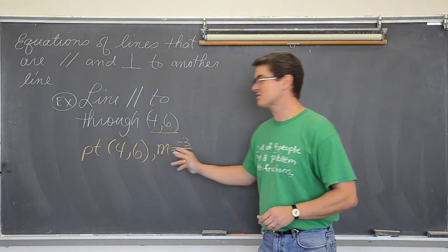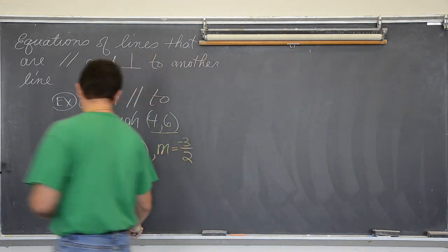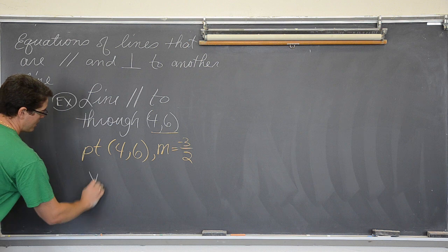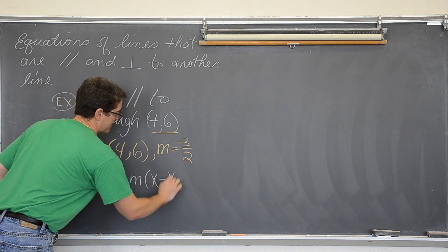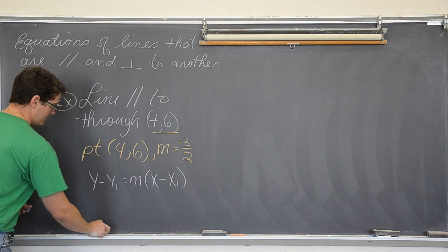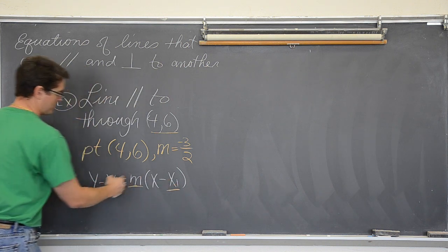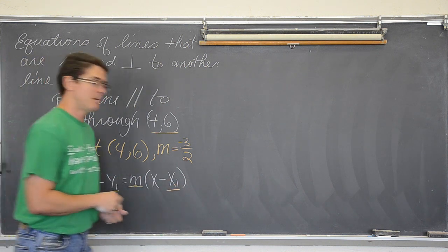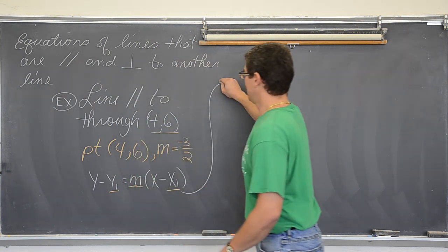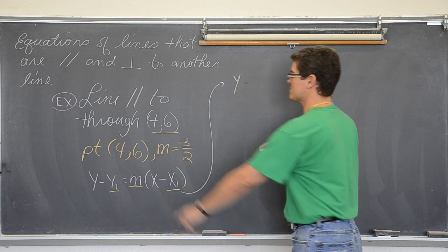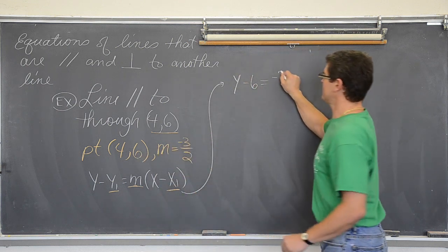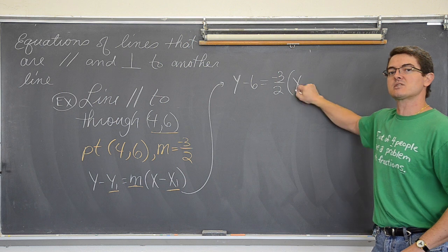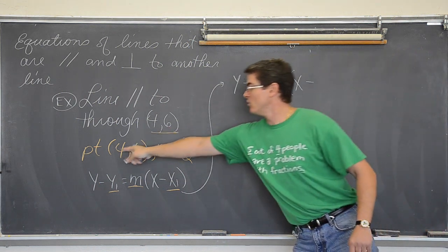Well if we have a point and a slope, we are going to plug into point slope form, which is y minus y1 equals m times x minus x1. And don't forget this is where our numbers go for x1, y1, and m. So we have y minus the y from the point equals the slope which is negative three over two times x minus the x of the point which is four.